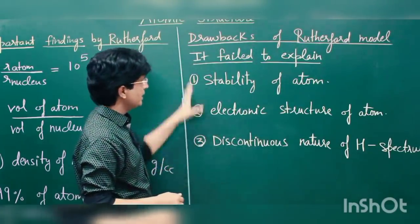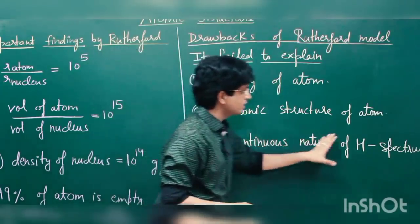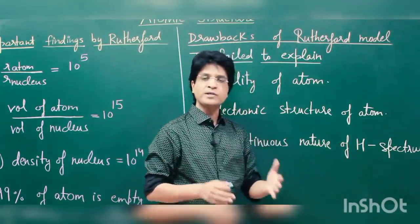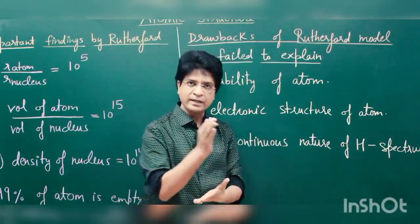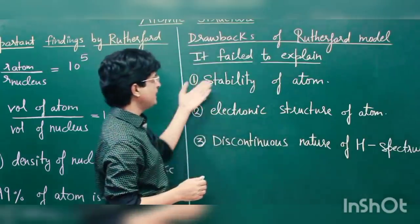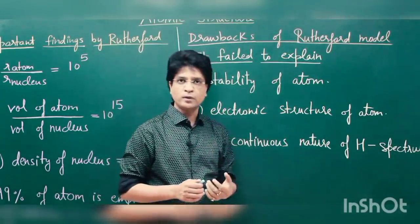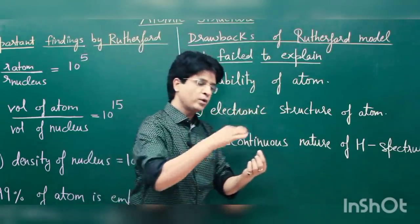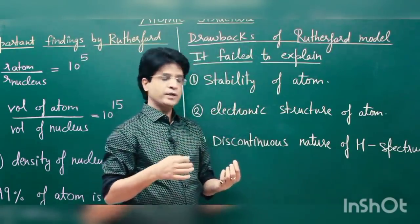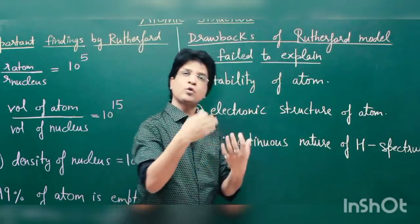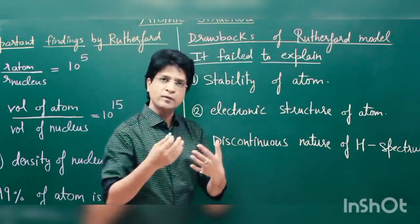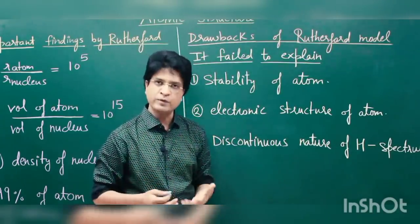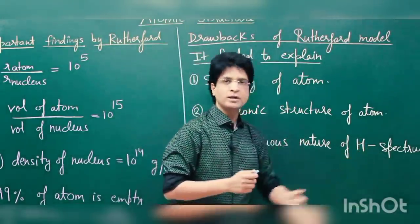Last but not the least, he couldn't explain the discontinuous nature of the hydrogen spectrum. It was found later that the hydrogen spectrum is discontinuous — there are certain lines in it. But if we believe Rutherford's model, since the electron is moving continuously, it should be emitting energy continuously, and the spectrum of hydrogen was supposed to be continuous. Experimentally, however, it was found to be discontinuous.